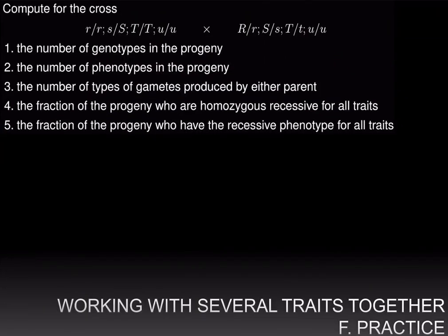Here is a problem for you to practice. A cross is given, and for this cross you have to compute: the number of genotypes the progeny will have, the number of phenotypes the progeny will have, the number of different types of gametes produced by the first or second parent, the fraction of progeny who are homozygous recessive for all traits, and the fraction who have the recessive phenotype for all traits. Pay attention to the precise genotypes that the parents have, compute the genotypes of the progeny for each trait separately, then combine them using branching diagrams and the product rule.